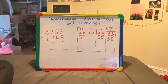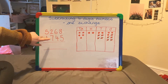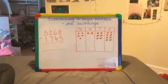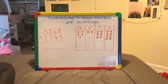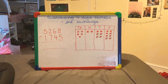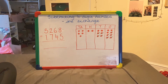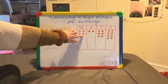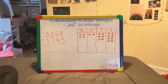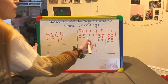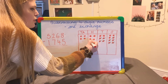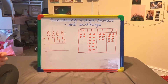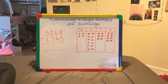Next I can move on to my hundreds column. Here it says I have 2 hundreds and I am taking away 7 hundreds, so this is where we're going to have to do an exchange. I'm going to take one of my 1,000 counters and exchange it for 10 hundreds counters because I need more hundreds counters to complete this subtraction. This counter is worth 1,000, so I need to replace it with counters worth the same — that's 1, 2, 3, 4, 5, 6, 7, 8, 9, 10 hundreds counters.